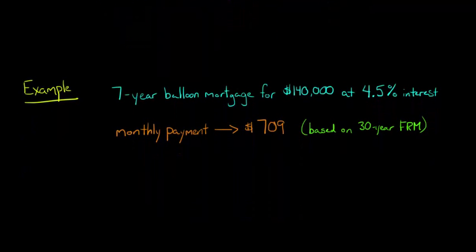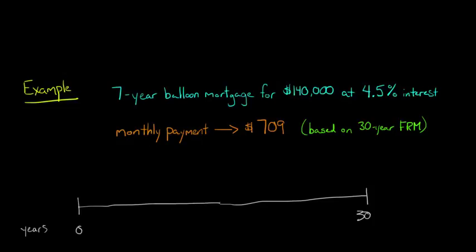If we were to draw a little timeline, if we were to go a full 30 years, here's year zero where we take out the loan, and this is year seven. After 30 years, at this point, assuming we were making these payments of $709 a month, we would fully amortize the loan, we would have the loan paid off at this point.